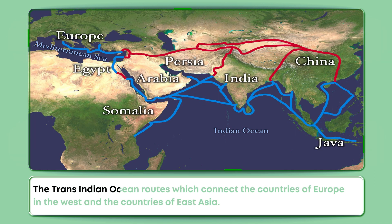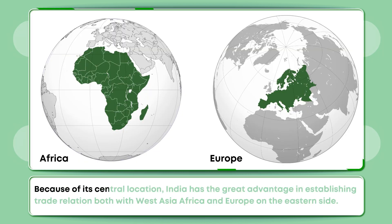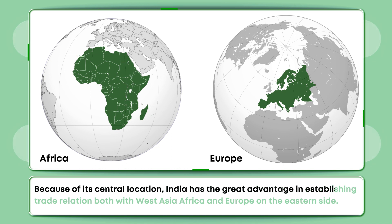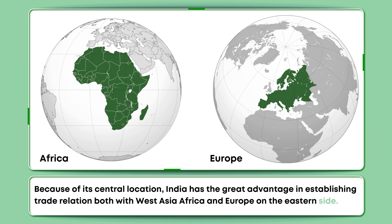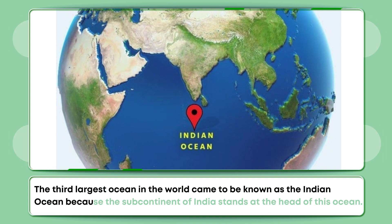The Trans-Indian Ocean routes which connect the countries of Europe in the west and the countries of East Asia give India a strategic position. Because of its central location, India has a great advantage in establishing trade relations with West Asia, Africa and Europe. The third largest ocean in the world came to be known as the Indian Ocean because the subcontinent of India stands at the head of this ocean.